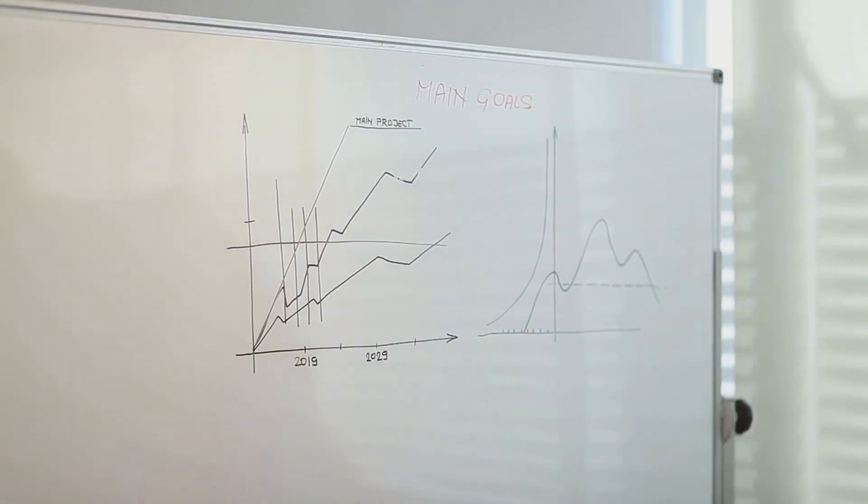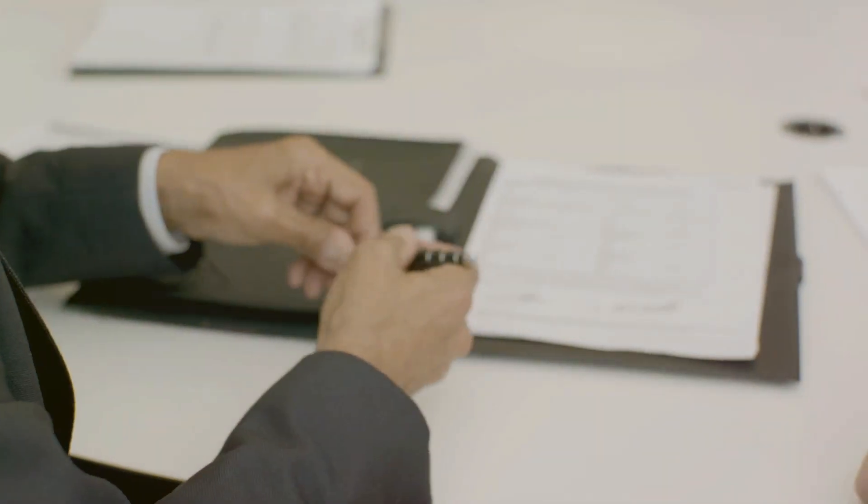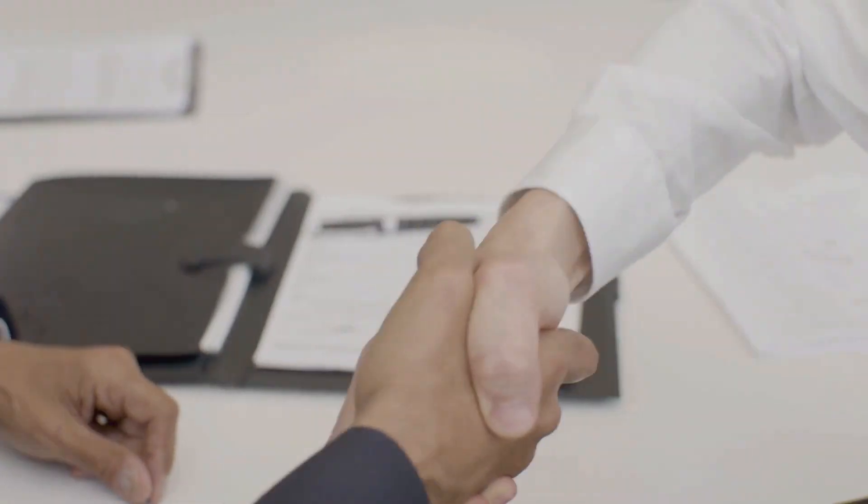The parent company's audited financial statements for the past three years are required. Finally, a lease agreement for the RO's office space in Vietnam is necessary.